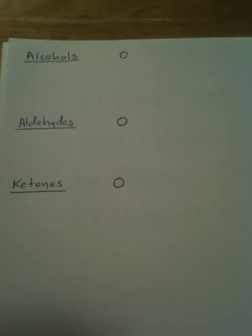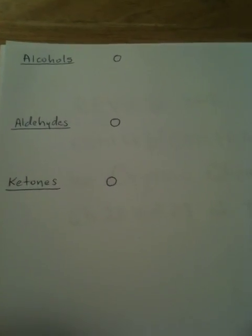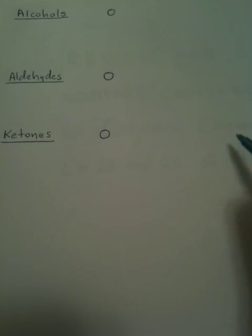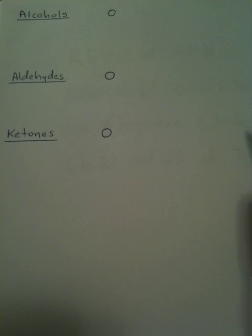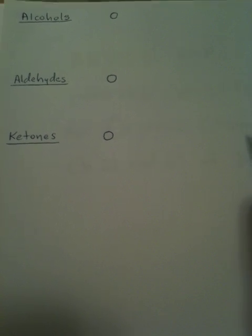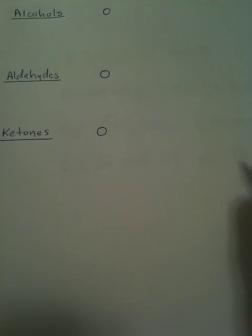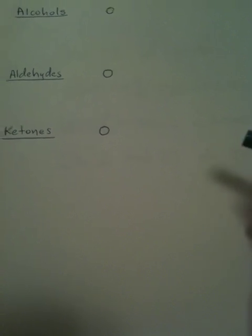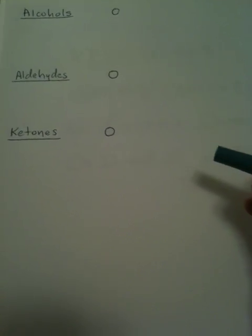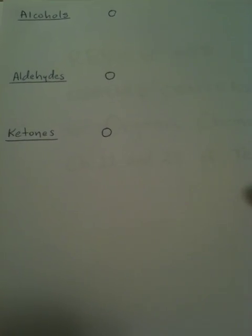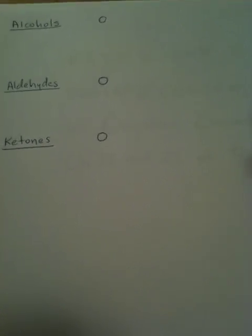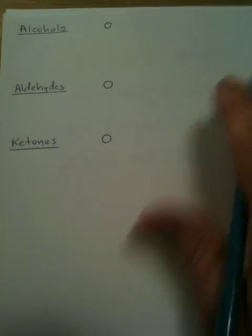What you're seeing here is that they all have something in common, and that is that they all have oxygens on them. So they become like an alkane, alkene, or alkyne, but they're going to have an oxygen on them, and these oxygens will be in different ways.